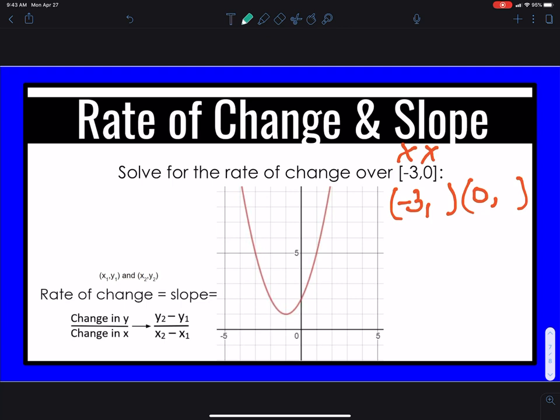So we're going to go to negative 3 on the x. So 1, 2, 3. And we're going to go up until we hit the line. So here's the line. So it's negative 3 and 5. And then 0 is my next. So 0 is right here. So we're going to go up until we hit the line. We hit there at 2. So when x is negative 3, your y is 5. When x is 0, your y is 2.